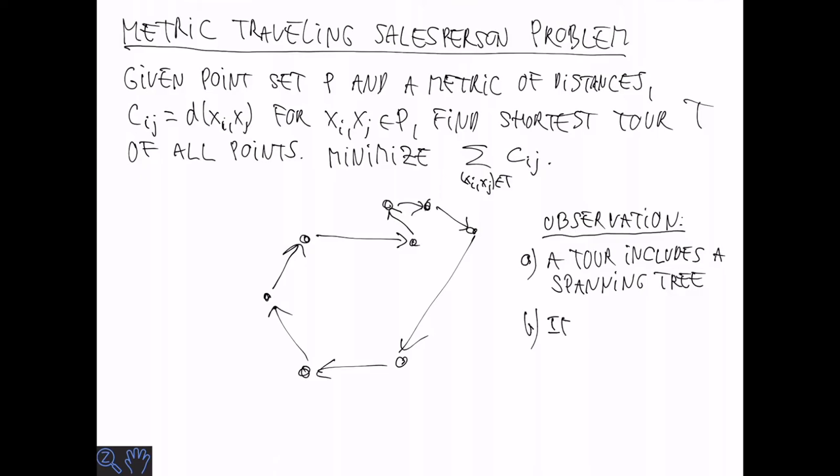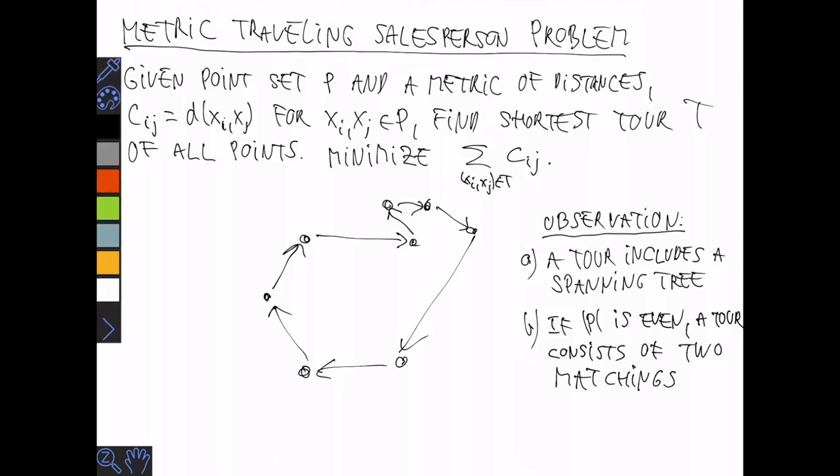The second observation is, at least if the number of points is even, a tour is going to consist of two matchings on the points. So let's color the edges.